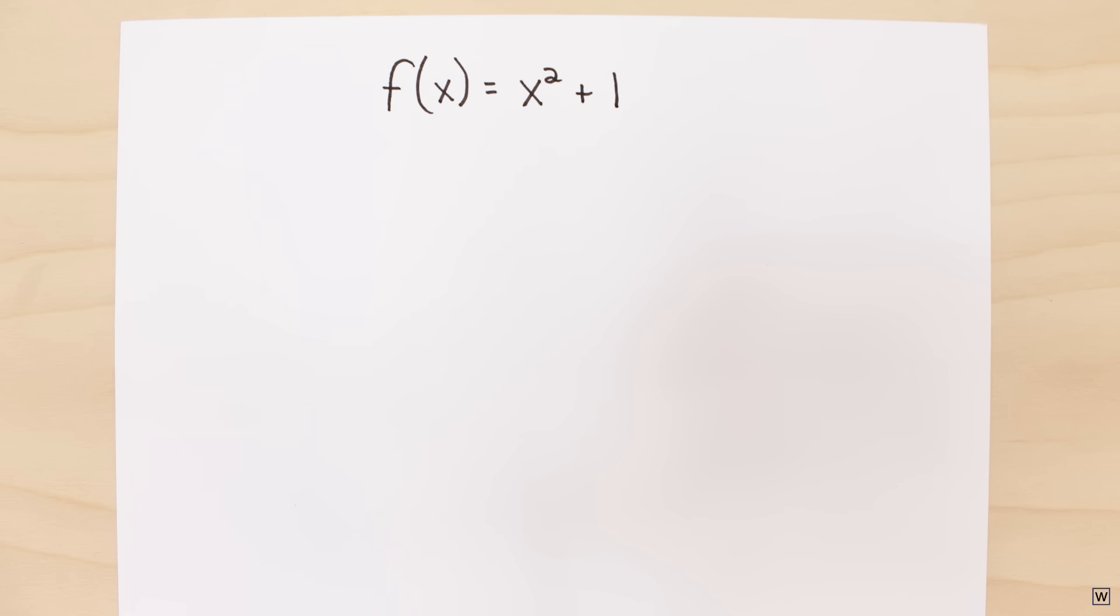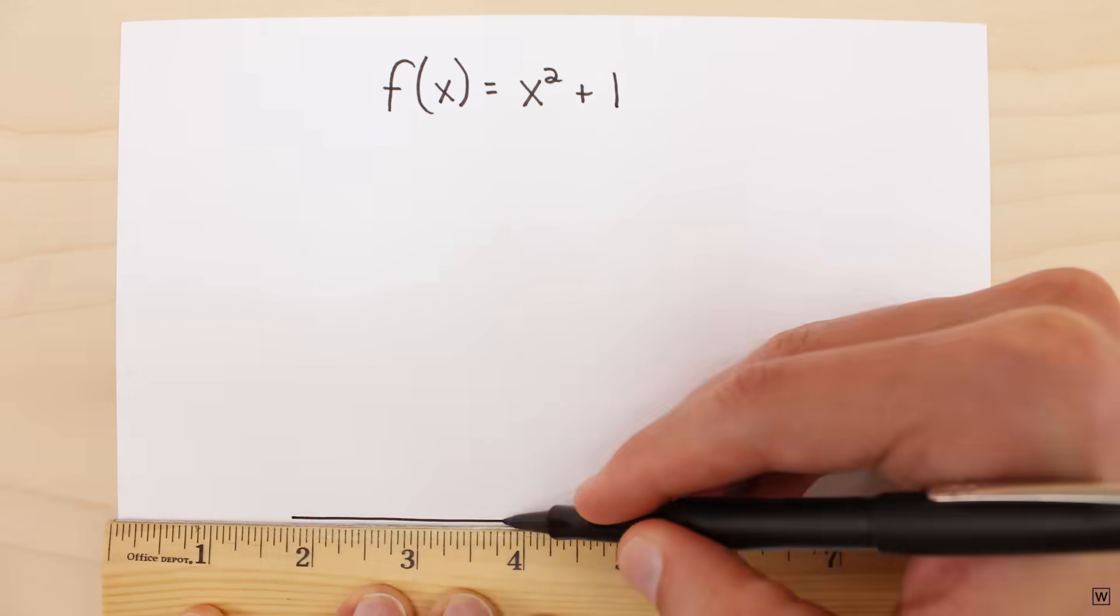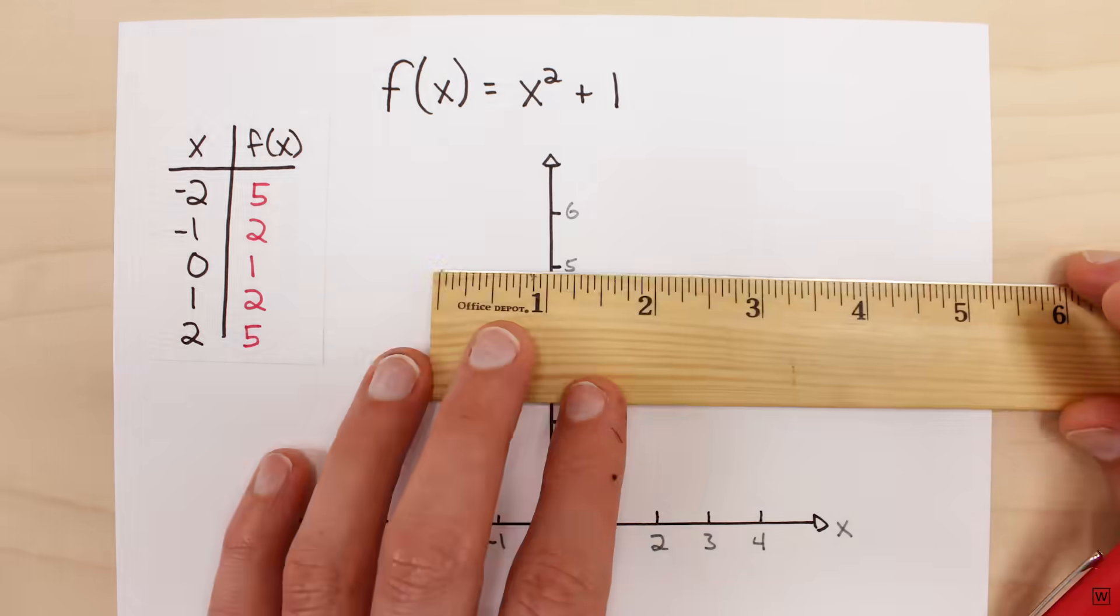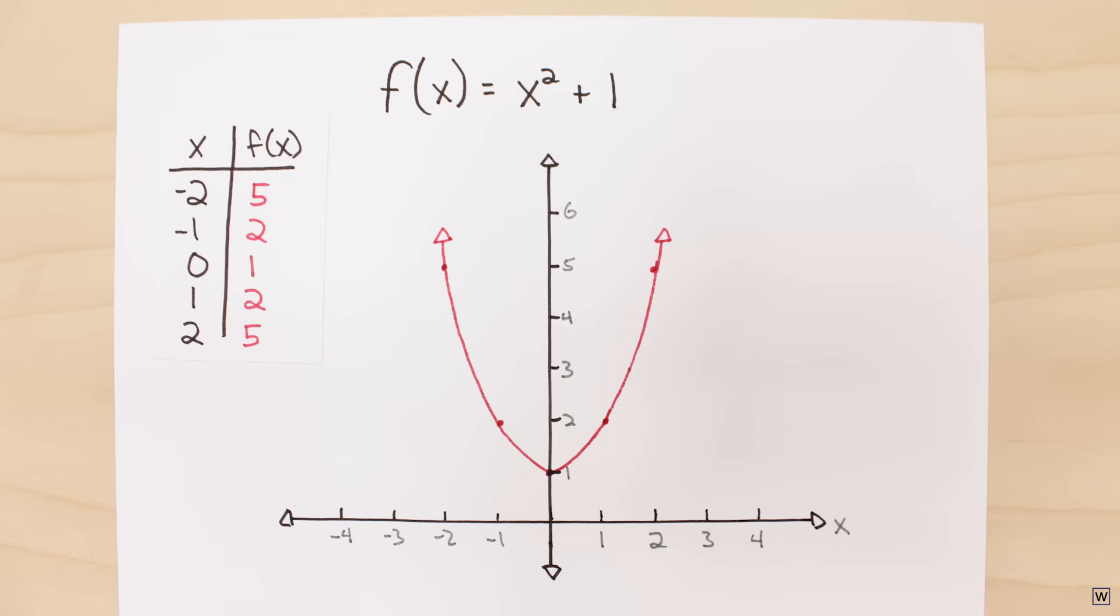Let's say we're given the function f of x is equal to x squared plus 1. We can graph our function and get a nice parabola. Now, let's say we want to figure out where the equation equals 0. We want to find the roots.